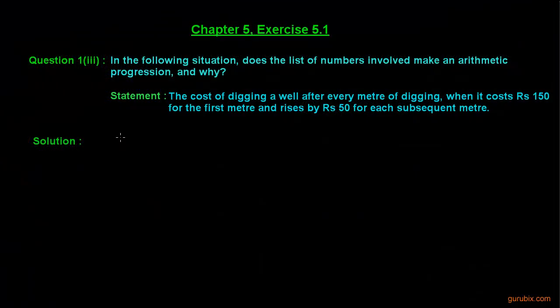Here is the third part of question 1 of exercise 5.1 of chapter 5. Let us see what this question says. In the following situation, does the list of numbers involved make an arithmetic progression, and if yes, then why?